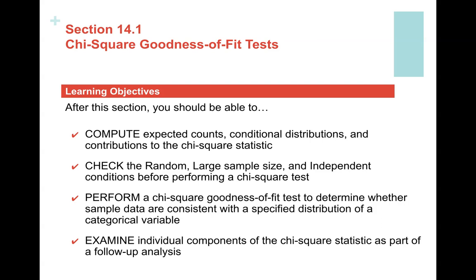The chi-square distribution is going to be unimodal and skewed to the right. So we cannot use the normal condition — we're going to look at the large sample size condition. Then we're going to perform an actual test: state, plan, do, conclude. We use the chi-square goodness of fit test to determine whether sample data are consistent with a specified distribution of a categorical variable.